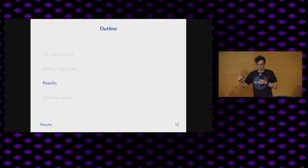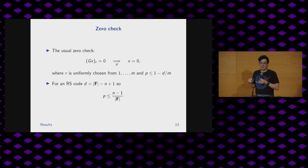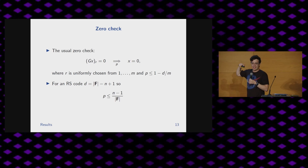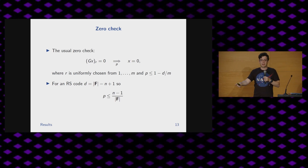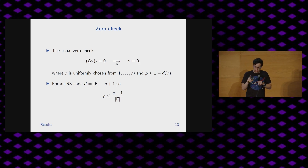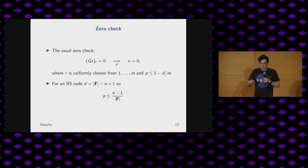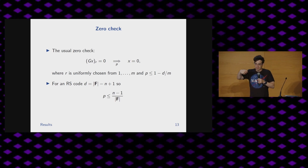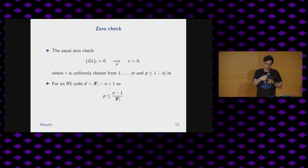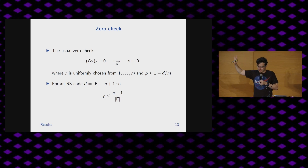We've eaten all the vegetables. Let's get to some interesting results. The usual zero check: take a vector X, encode it, and then check a random symbol from the encoding. If it's equal to zero, then with high probability the original thing must have been zero. That's kind of the definition of distance — if D is very large relative to the size, with high probability you'll hit one of those non-zero entries. For a Reed-Solomon code, this is exactly the one-dimensional Schwartz-Zippel lemma: the probability is the degree divided by the field size.